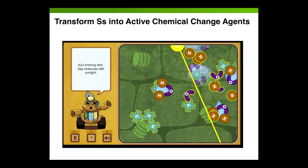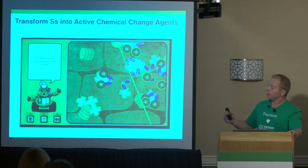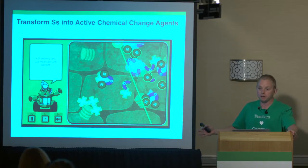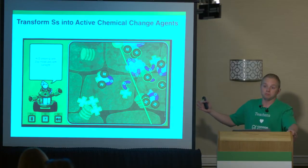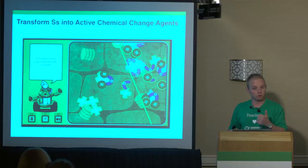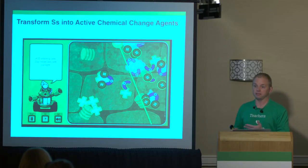The next use case is to use another mini game to transform students into active chemical change agents. This can happen in a shared instruction or guided practice activity portion of your lesson on photosynthesis. Through this game, students are introduced to a robot called BioBot Bob, and in order to succeed through the gameplay, they have to produce key things for BioBot Bob: fuel, food, and self-defense.